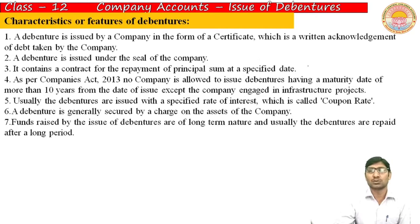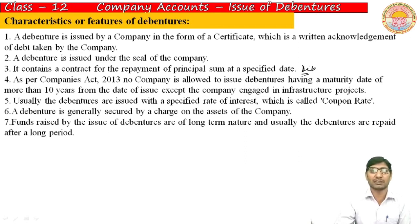The date mentioned on the debenture certificate or specified in the terms of issue is when the outstanding amount can be paid. As per the Companies Act 2013, no company is allowed to issue debentures having a maturity date of more than 10 years, except companies engaged in infrastructure projects.